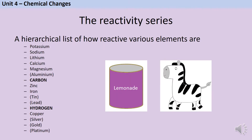The reactivity series is a hierarchical list based on how reactive different elements are. It's usually given as a list of metals, but with carbon and hydrogen — which are obviously non-metals — thrown in. This is because reduction using carbon is a really economically important reaction which only works with elements less reactive than carbon, so it's important that we can compare these metals to carbon. The reactivity of hydrogen is vital in order to predict which metals will react with water and acids.